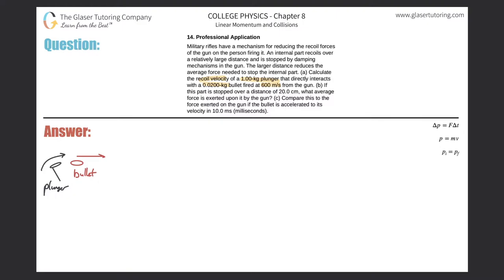Let's take a look at the picture. There's a plunger inside the gun, and the plunger rotates forward so as to make contact with the bullet. That contact sends the bullet flying to the right, and the plunger will then have a recoil velocity backwards. Let's just assume it's moving in a straight line.